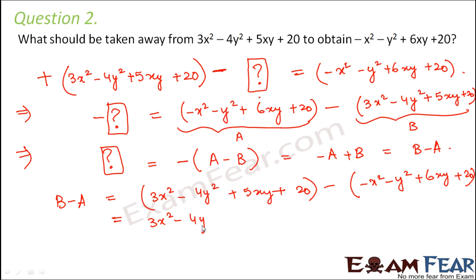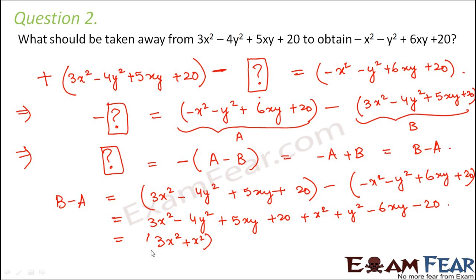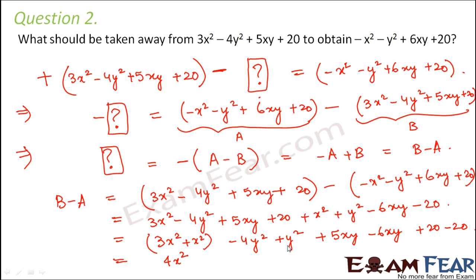Opening the brackets: 3x squared minus 4y squared plus 5xy plus 20 plus x squared plus y squared minus 6xy minus 20. Collecting like terms: 3x squared plus x squared gives 4x squared; minus 4y squared plus y squared gives minus 3y squared; plus 5xy minus 6xy gives minus xy; and plus 20 minus 20 gives 0. So the result is 4x squared minus 3y squared minus xy.